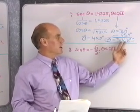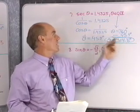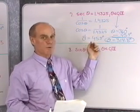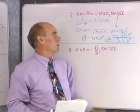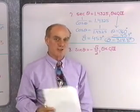We can check this by taking cosine of 314.3 degrees and then finding the reciprocal of that — we should get 1.4325. You might want to verify that.